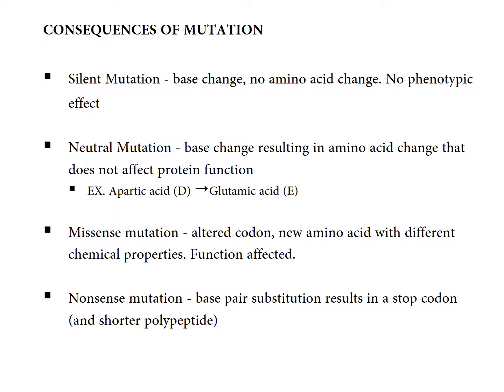You can also have neutral mutations, where a base change results in an amino acid change that does not affect protein function. For example, aspartic acid could be changed to glutamic acid, but because they have similar properties, protein function is not affected. You can also have missense mutations, where a codon change specifies a new amino acid with a different chemical property, affecting protein function — for instance, lysine at a position being changed to glutamic acid, meaning the protein may not function well.